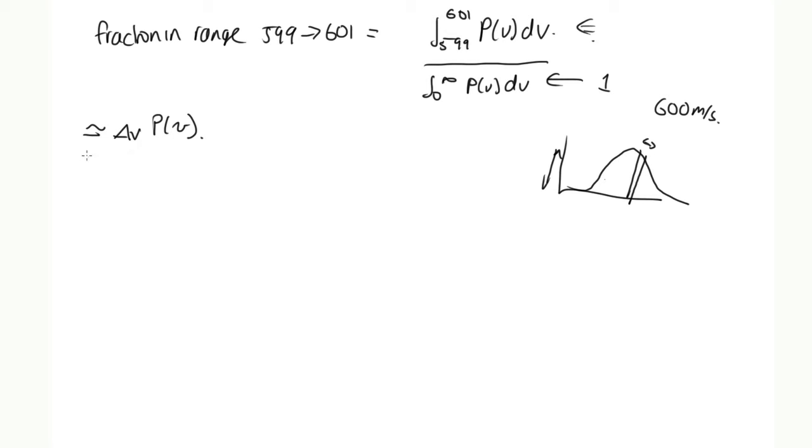And so we just need to work out what this is. So this is equal to delta V, the width of that is 2. 601 minus 599 is 2 times P(v).